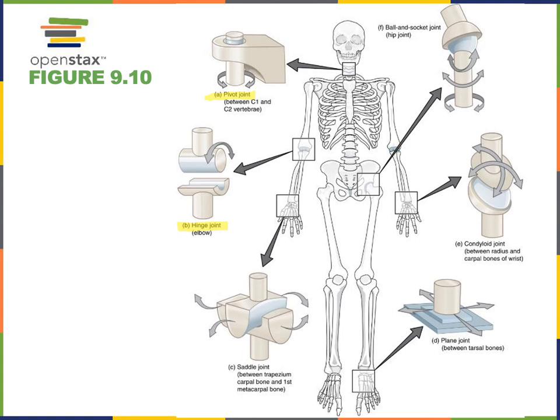All hinge joints enable flexion and extension. The humero-ulnar joint, commonly known as the elbow, is one example. Another example is the tibio-femoral joint, commonly referred to as the knee, which is also a hinge joint because it only allows that angular motion of flexion and extension. Similarly, the talo-crural joint, commonly referred to as the ankle joint, is also a hinge joint.